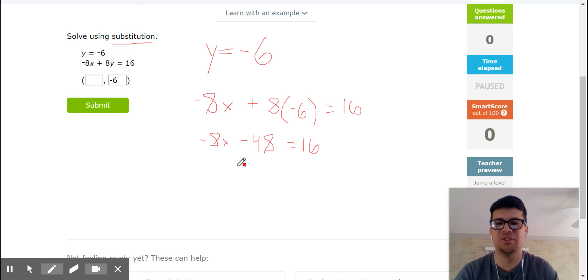Two-step equation. I'm gonna add 48 to both sides. So I have negative 8x equals, and 16 plus 48 is 64. And now all I have to do is divide both sides by negative 8. So x is equal to negative 8, because negative 8 times negative 8 would give me 64.